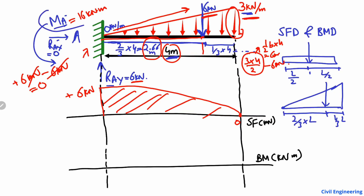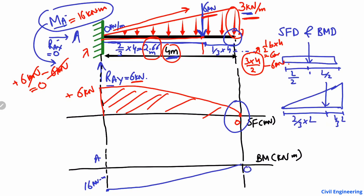For the bending moment diagram, the maximum value is 16 kilonewton-meter at point A. Since there is no support at the free end of the cantilever beam, the moment there must be zero. So the bending moment diagram goes from 16 kN·m at point A down to zero at the free end. This is the bending moment diagram for the cantilever beam.